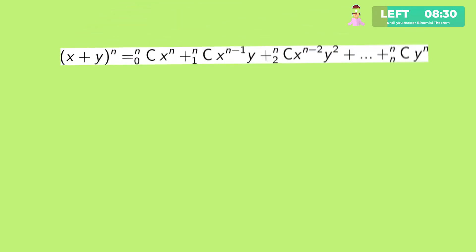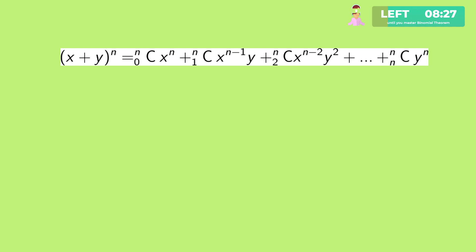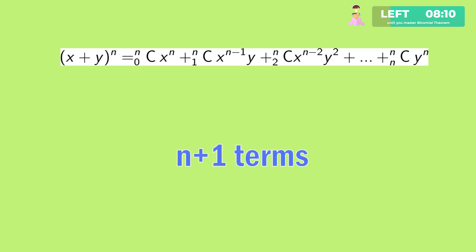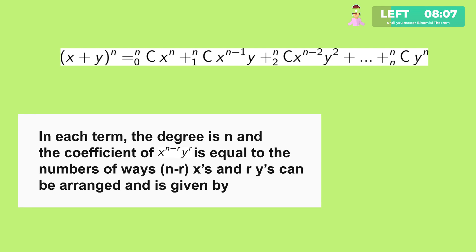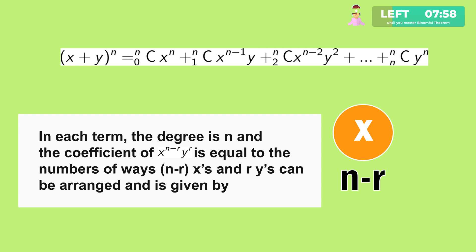The Binomial Theorem states that the expansion of (x plus y) to the power n equals nC0 x to the power n, plus nC1 x to the power (n minus 1) into y, plus nC2 x to the power (n minus 2) y squared, up to nCn y to the power n, where n belongs to natural numbers. This expansion has n plus 1 terms; in each term the degree is n, and the coefficient of x to the power (n minus r) into y to the power r is nCr.